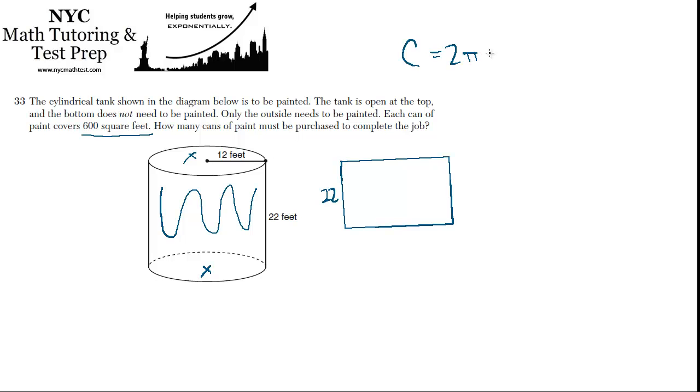So what is the circumference of a circle? It's 2πr, where the r is the radius, and the radius is 12 feet. So that's 2 times π times 12, which is 24π.